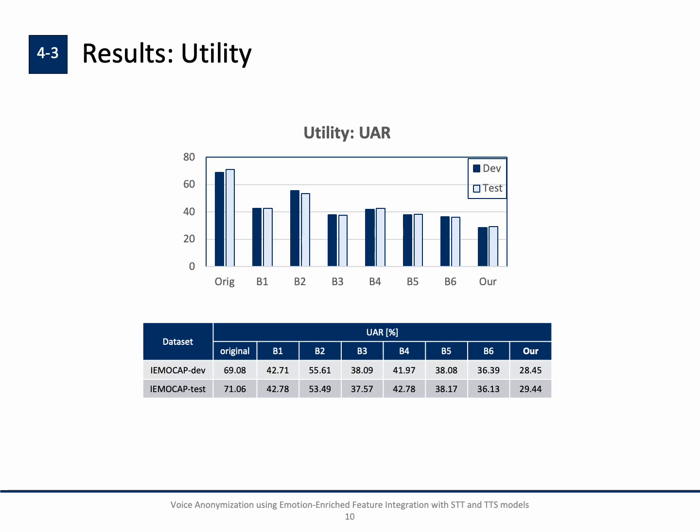The last evaluation metric for utility is the recall rate for speech emotion recognition, where a higher score is better. When comparing to the baselines, others perform moderately well, but our model unfortunately shows the lowest performance in terms of emotion recognition. This clearly indicates that while our model may excel in other metrics, there is a significant gap in emotion recognition performance, especially compared to both the original data and some baselines. This highlights the need for further improvements in how our model handles emotional expressiveness.